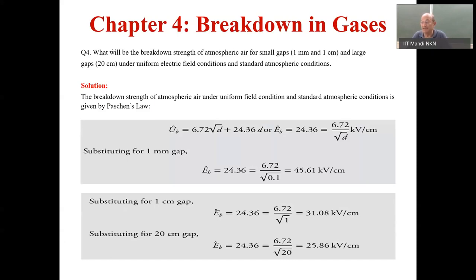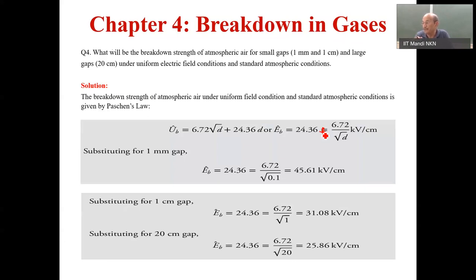In a uniform field, to get the electric field intensity you just divide by d — the potential difference across the electrode divided by the gap distance. So the peak value of electric field intensity works out to be: E = 24.36 + 6.72/√d  kV per centimeter, where d is taken in centimeters.